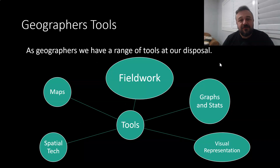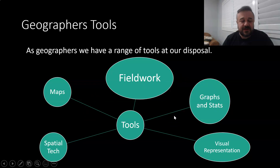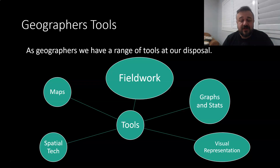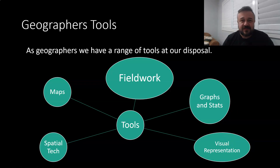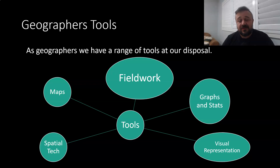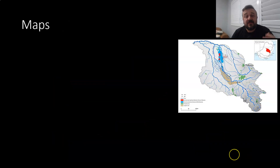As geographers and explorers, we have a range of tools at our disposal and they kind of overlap. We've got fieldwork and maps — those are the two everyone thinks of — but we also use graphs and statistics, visual representations, and spatial technologies. Visual representations are like telling a story with a picture, and we use spatial technologies to build certain types of maps, so they all overlap, but these are the distinct types of tools we have.